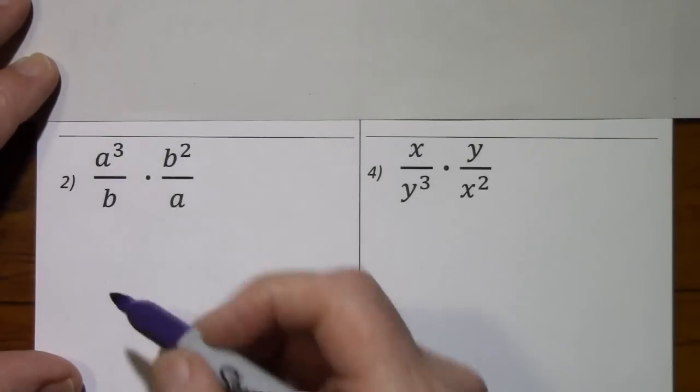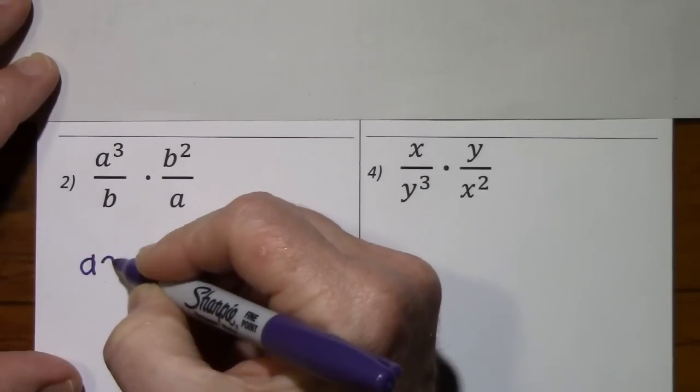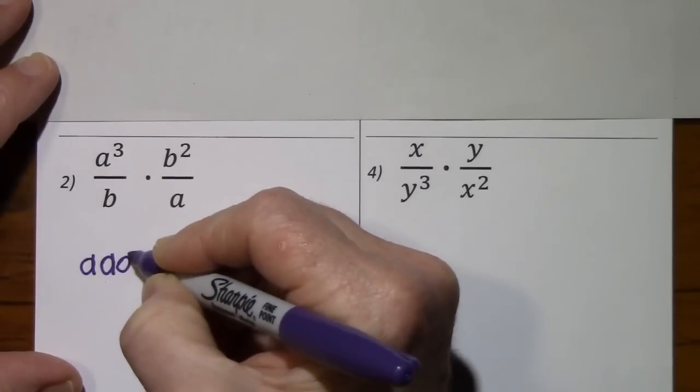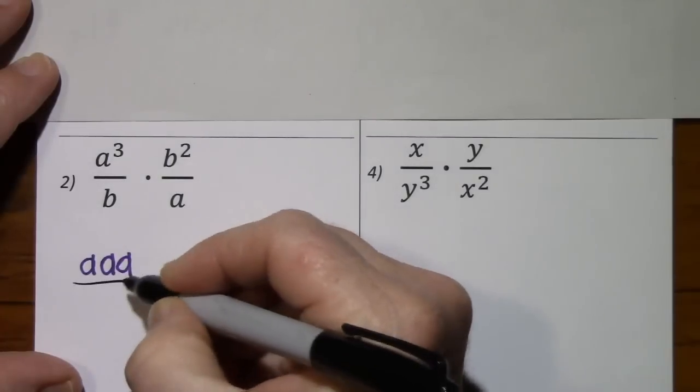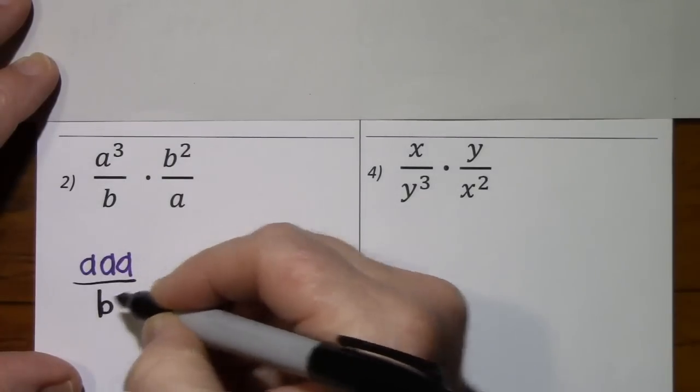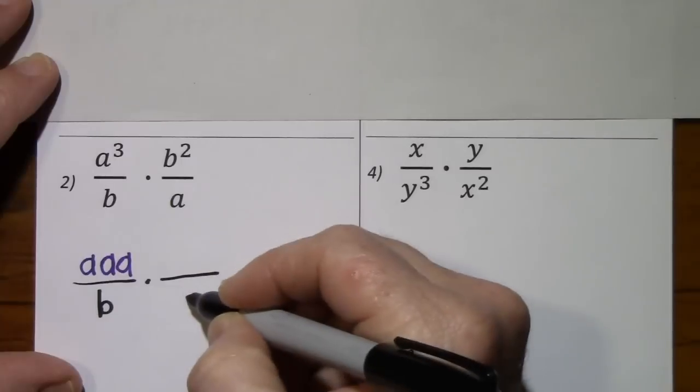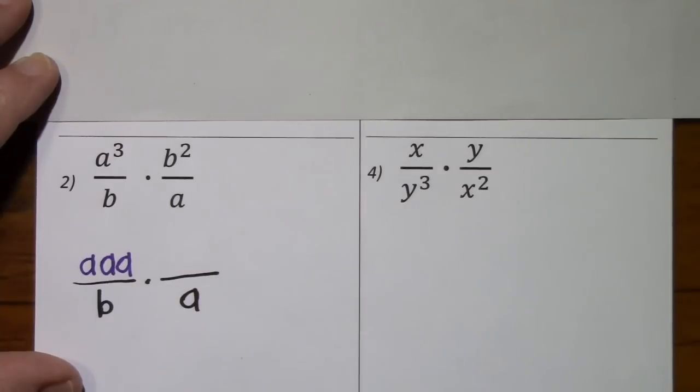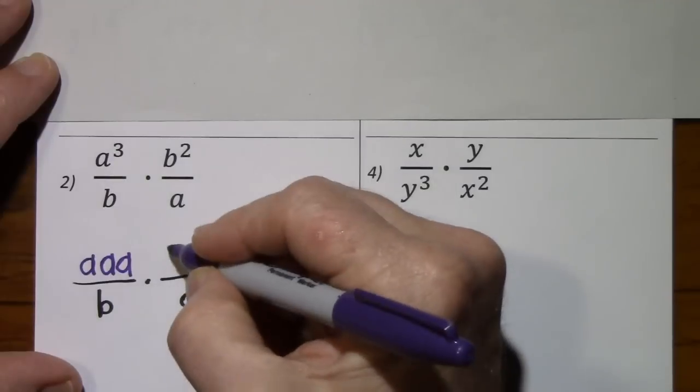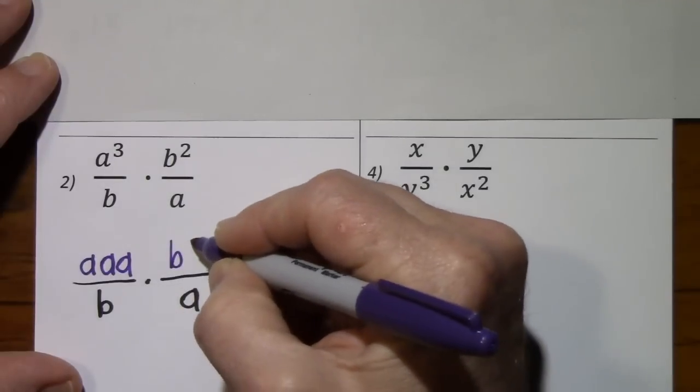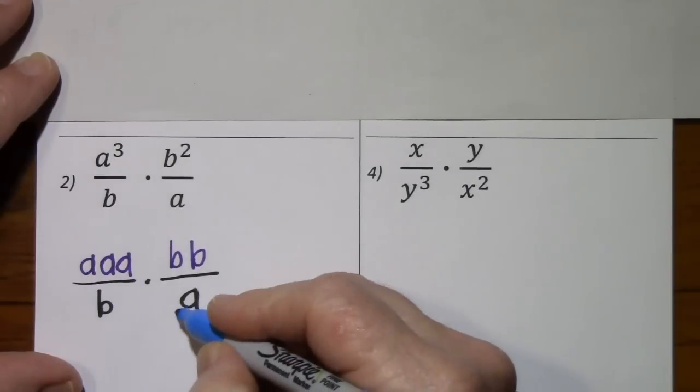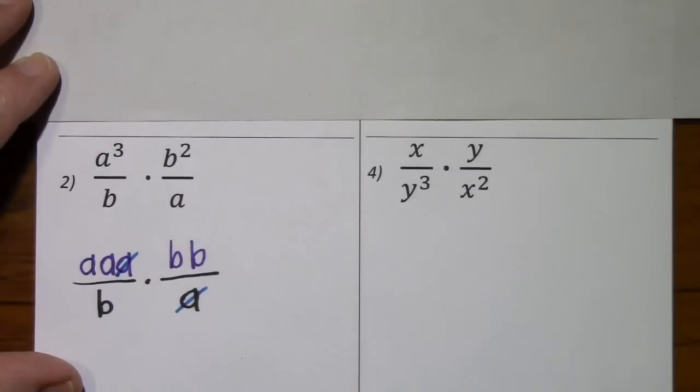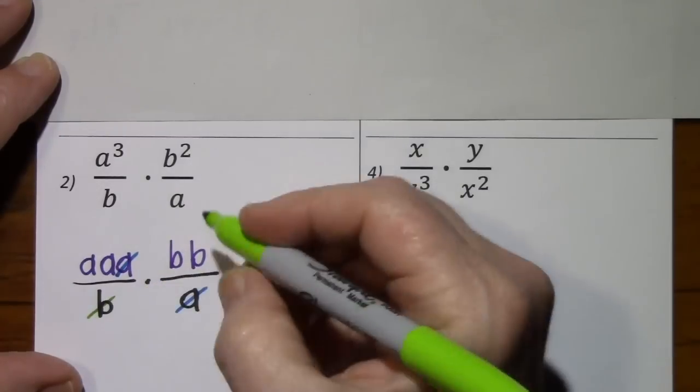For a cubed, I'll simply write a times a times a, and then for b squared, we'll write that as b times b. And now a cancels a, b cancels b.